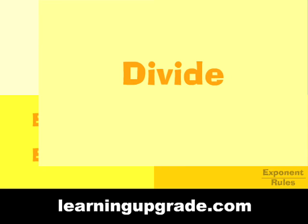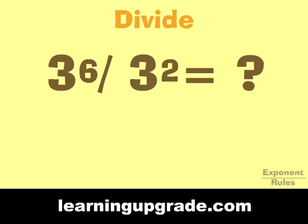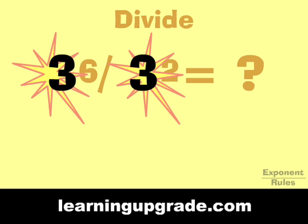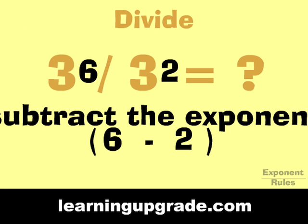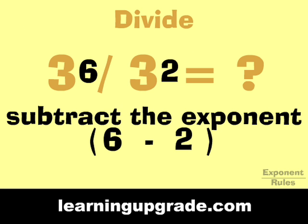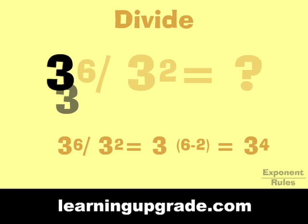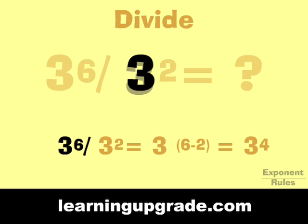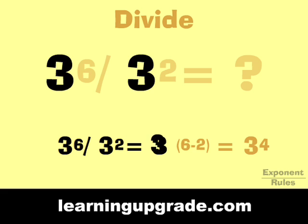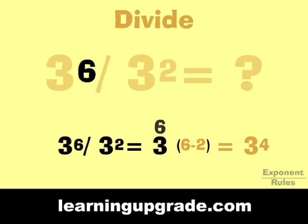When you divide numbers with exponents that have the same base, you subtract the exponents and keep the same base. Example: 3 to the sixth power divided by 3 squared equals 3 to the sixth minus 2 power.